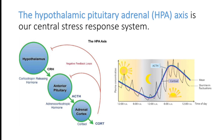The surge of cortisol is released mainly in the early morning hours. Whenever cortisol levels are high, it will negatively control the hypothalamus and anterior pituitary. This axis is called the hypothalamic pituitary adrenal or HPA axis. Whenever there is stress, cortisol will be released from our body.